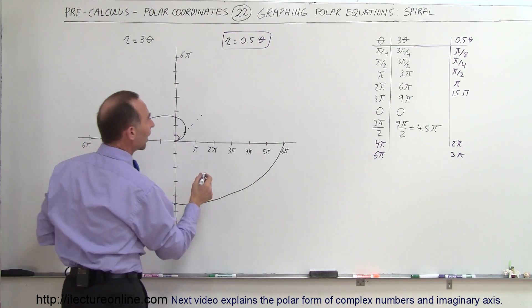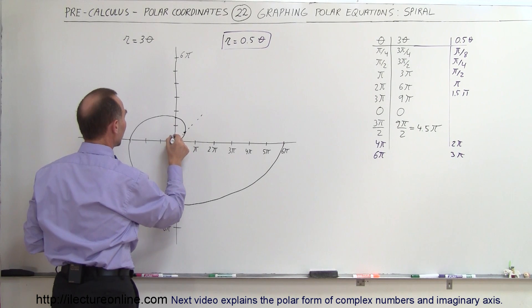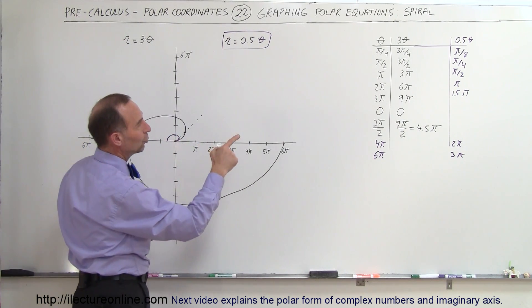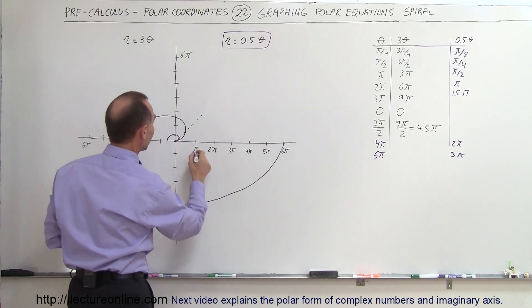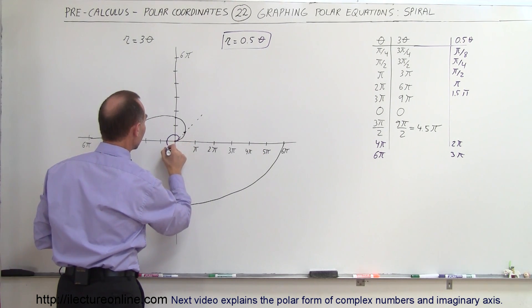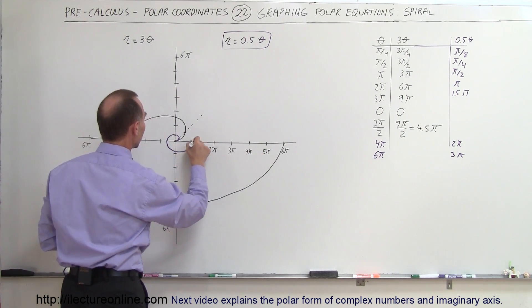When we have 180 degrees or π, that would be π divided by 2, so now we're over here. At 2π, when we go once a circle around, 2π would be equal to π. So this comes around like this.